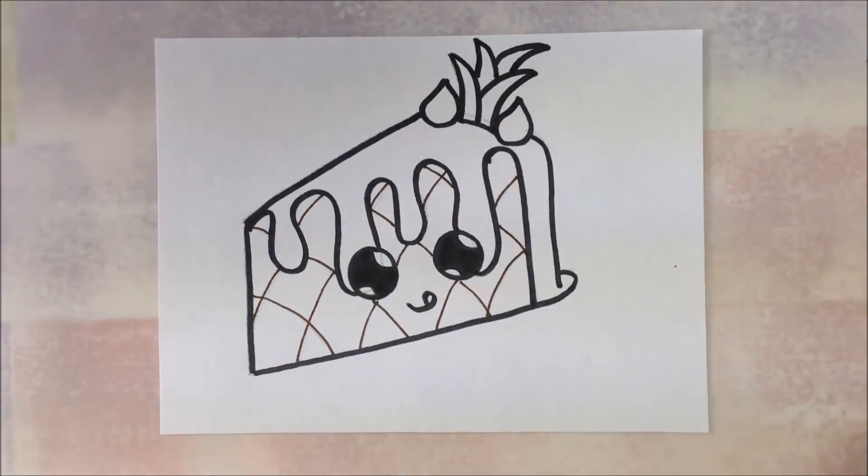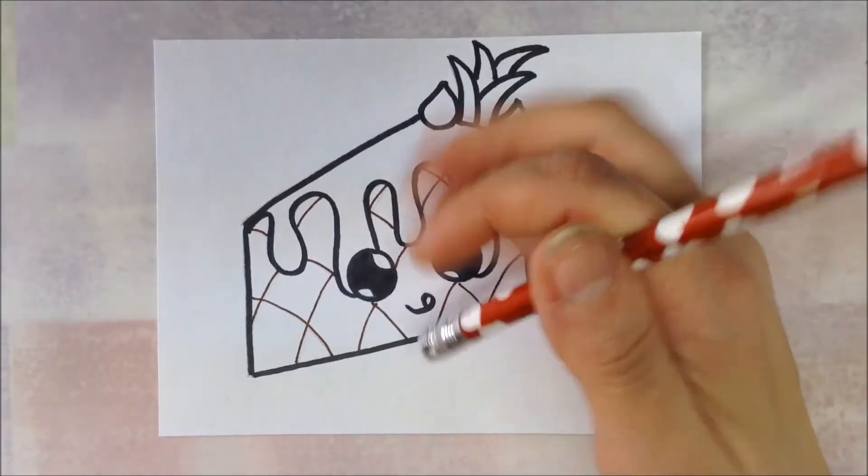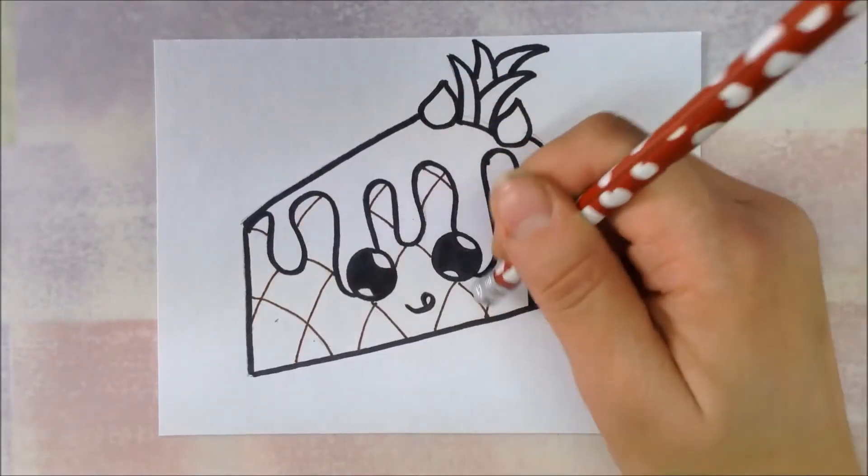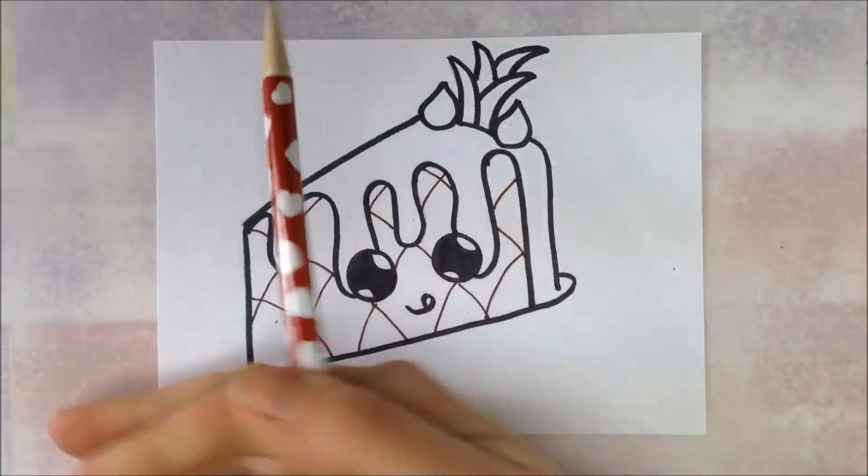Now we're going to erase any pencil that you might have missed with the permanent marker, especially in the eyes if you went on top of your dripping frosting. You'll want to get rid of those that are inside the white of the eyes. Just a quick little once-over to get everything cleaned up.